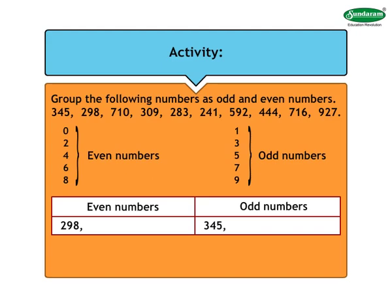In the same manner, we will group the other numbers. 710 is an even number, 309 is an odd number, 283 is an odd number, 241 is an odd number, 592 is an even number, 444 is an even number, 716 is an even number, and 927 is an odd number.